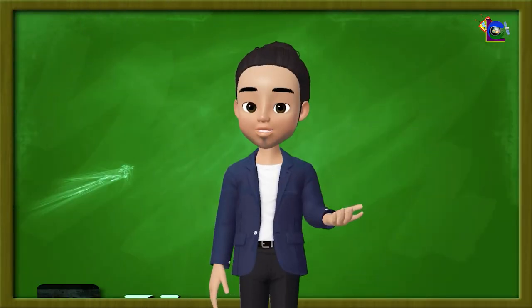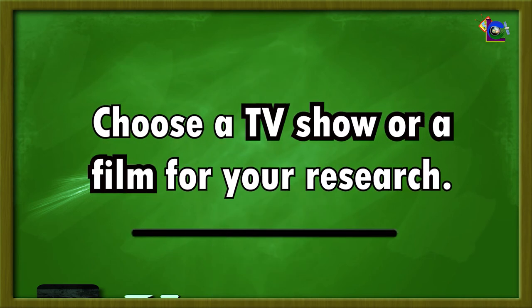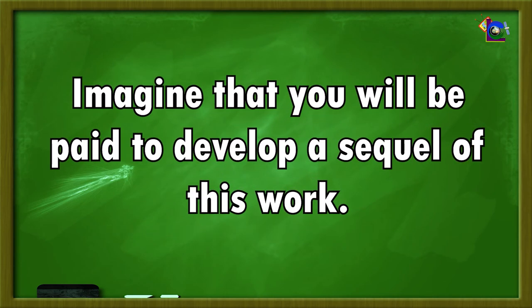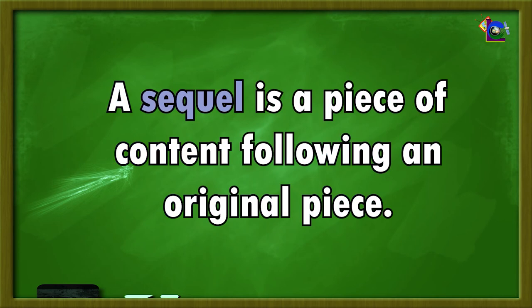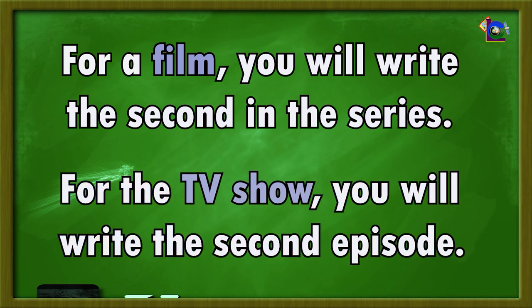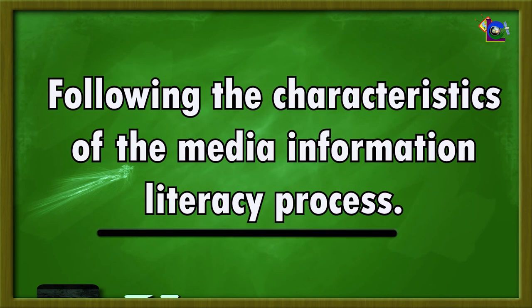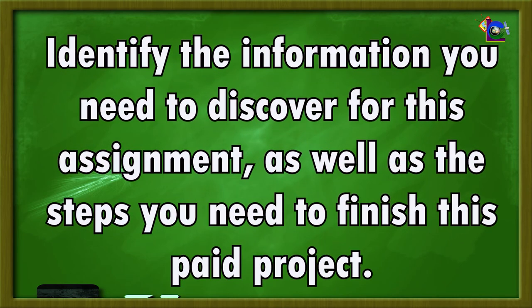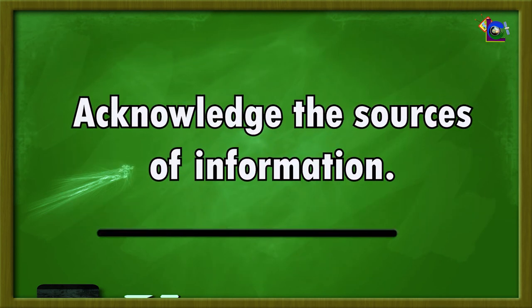To test your media and information literacy skills, choose a TV show or a film for your research. Imagine that you will be paid to develop a sequel of this work. A sequel is the piece of content following an original piece. For a film, you will write the second in the series; for the TV show, you will write the second episode. Following the characteristics of the media information literacy process, identify the information you need to discover for this assignment, as well as the steps you need to finish this paid project. Acknowledge the sources of the information.